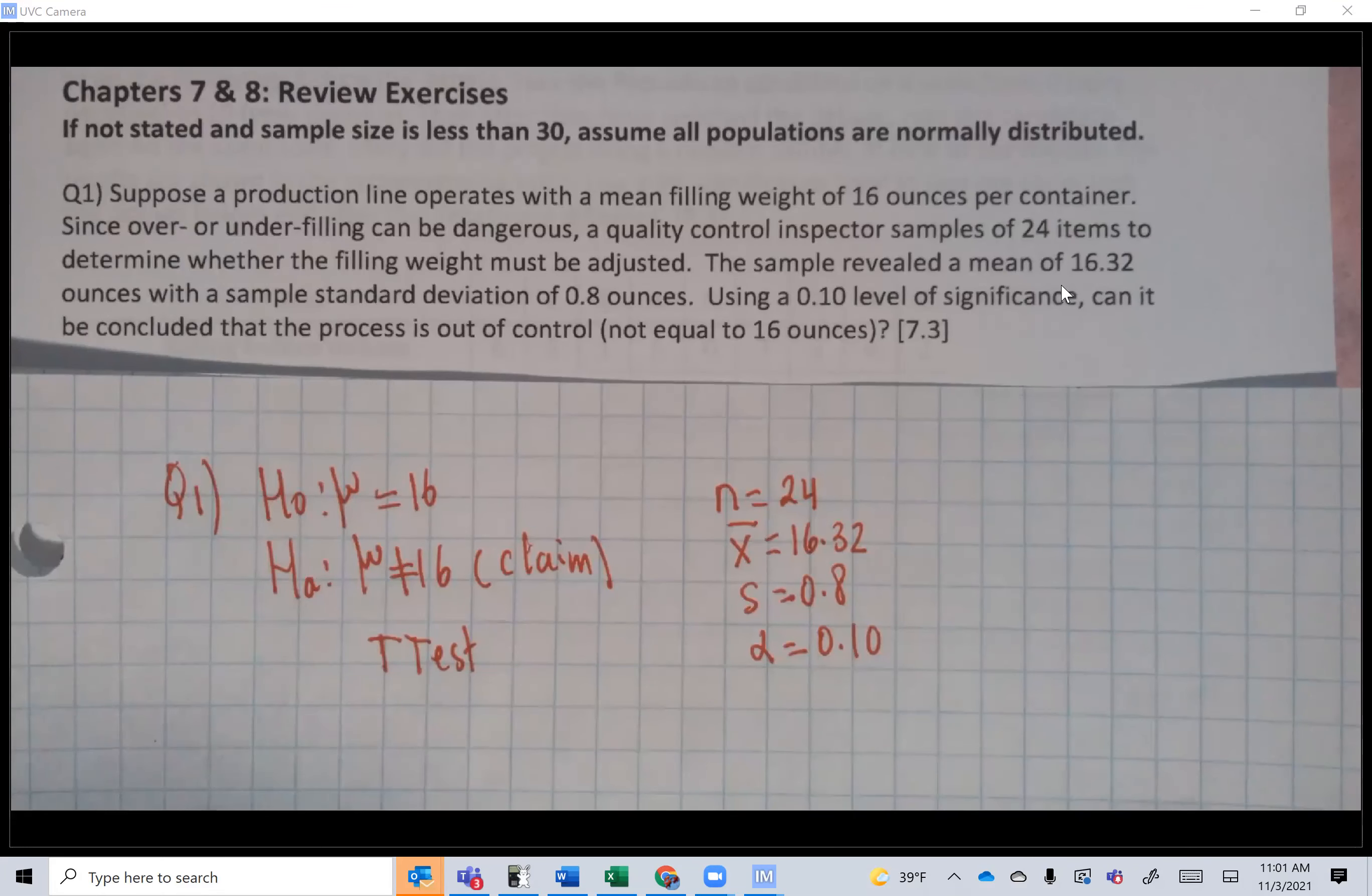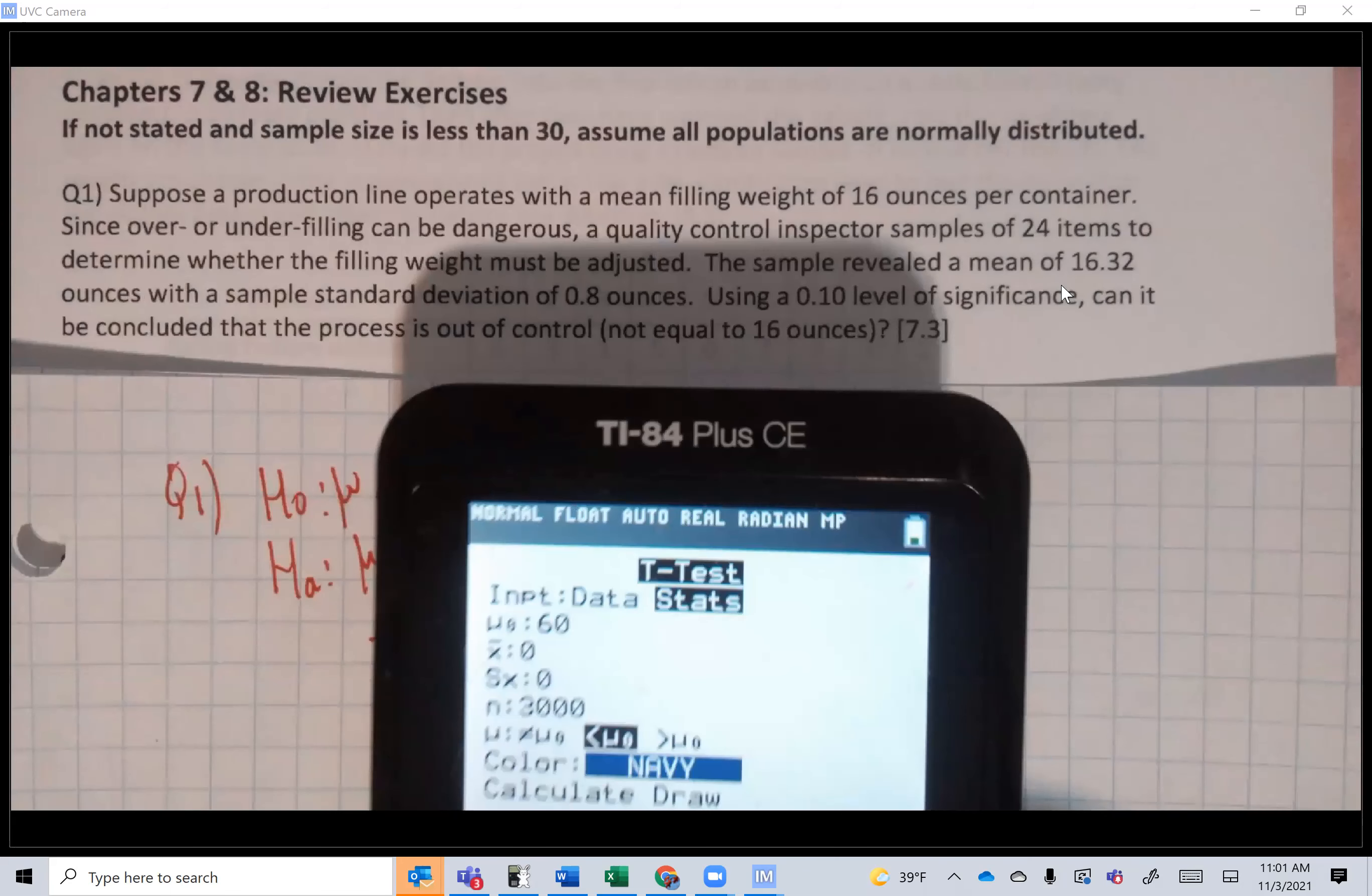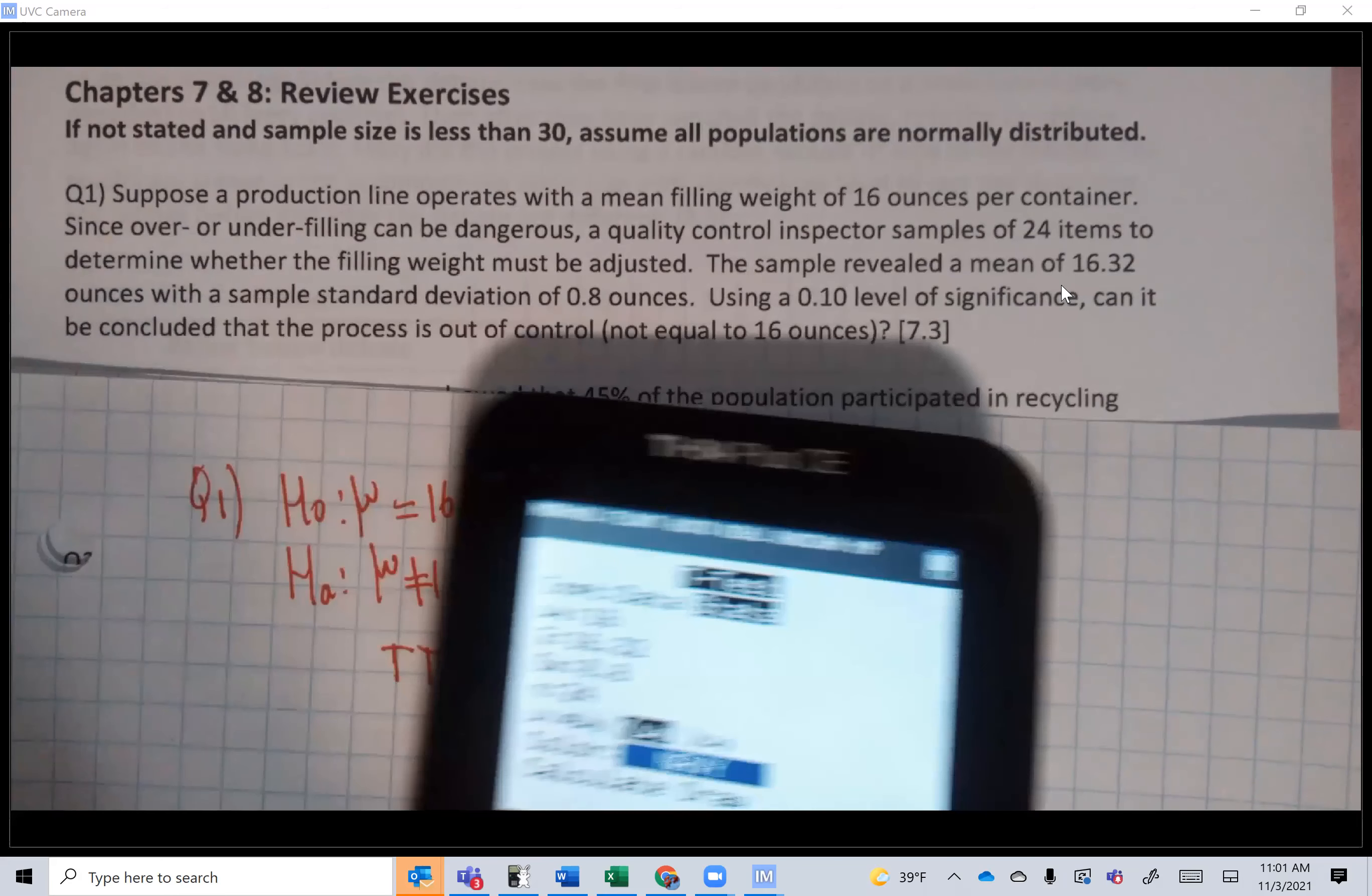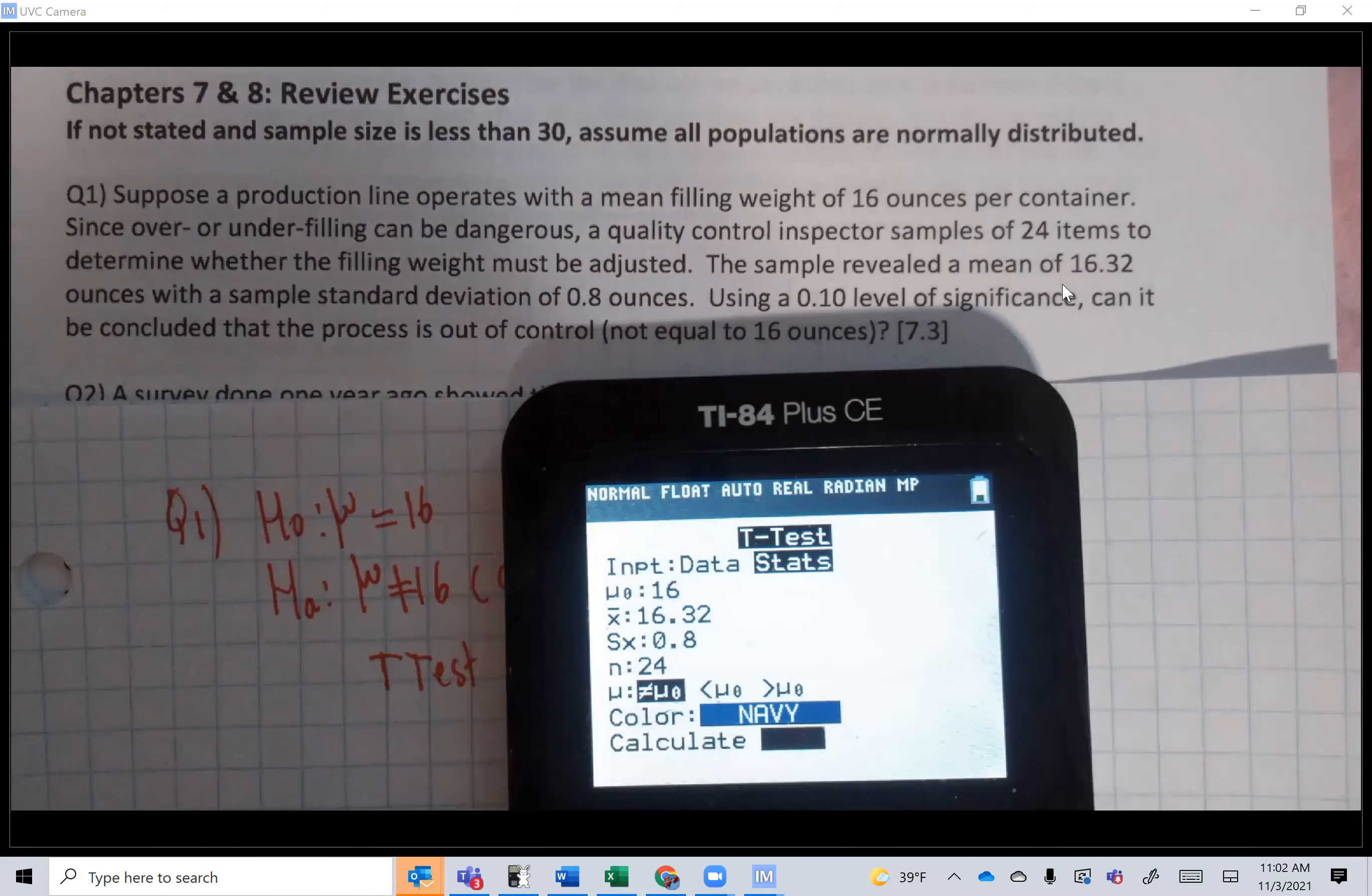We'll go to stat, tests, t-test. μ₀ is 16, x̄ is 16.32, s is 0.8, n is 24. Make sure to select the proper alternative sign, which is not equal to. I can do a draw here.